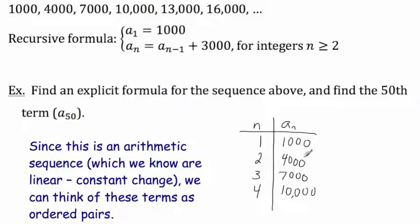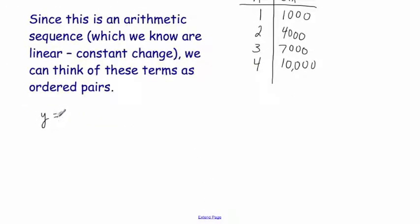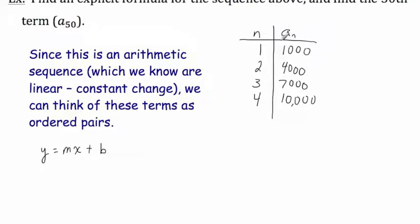We know this is linear because it's a constant change. From the first term to the second, we added 3,000; from 4,000 to 7,000, we added 3,000; and from 7,000 to 10,000, we added 3,000. So we can model this with a linear equation — y equals mx plus b. Since we're using a sub n as our output instead of y, and n as our input instead of x, our equation becomes a sub n equals m times n plus b. We are still looking for the slope, which is the rate of change, and the y-intercept b.